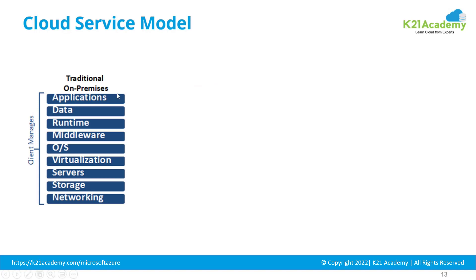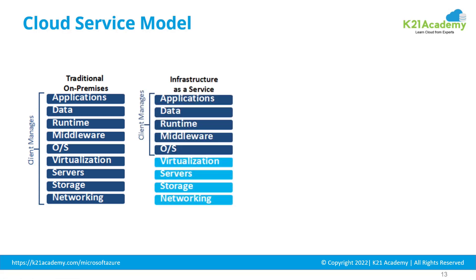This is a traditional on-premise or customer's data center on which you have servers. In a traditional on-premise deployment model you have networking, storage, servers, virtualization, operating system, middleware, runtime, data, and application — everything is the responsibility of the client. You might have worked on this kind of environment — that's a traditional on-premise deployment model.